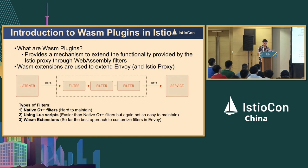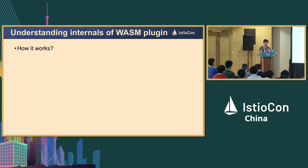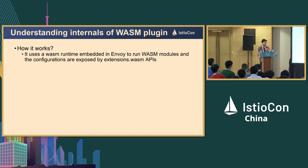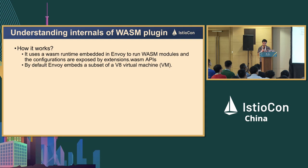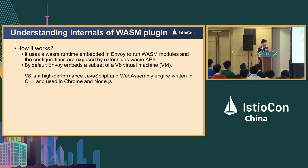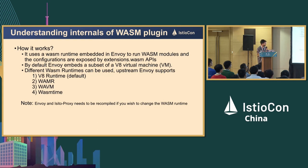These three methods can be used to create Wasm plugins. Now let's see internally what happens when we create filters using Wasm plugins in Envoy. We use Envoy APIs and create Wasm extensions using the extensions.wasm API available in Envoy. By default, Envoy uses V8 as a virtual machine to create the Wasm runtime environment. You can change the Wasm runtime — available options are V8, WAMR, WASM, and Wasmtime — by recompiling Envoy and Istio. But by default it's V8, so we'll focus on that.